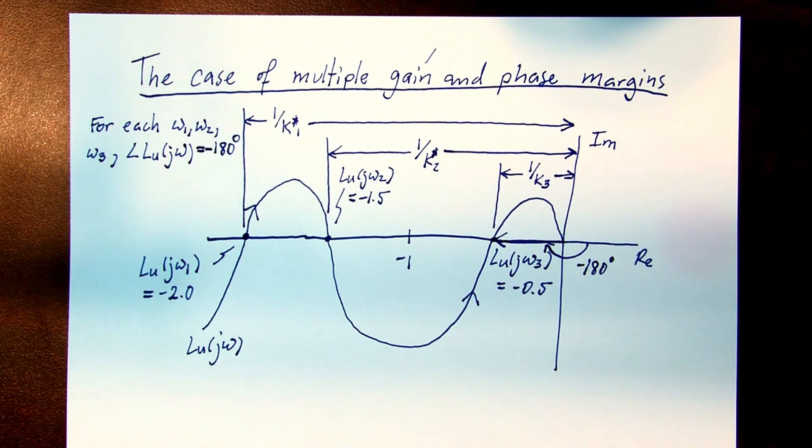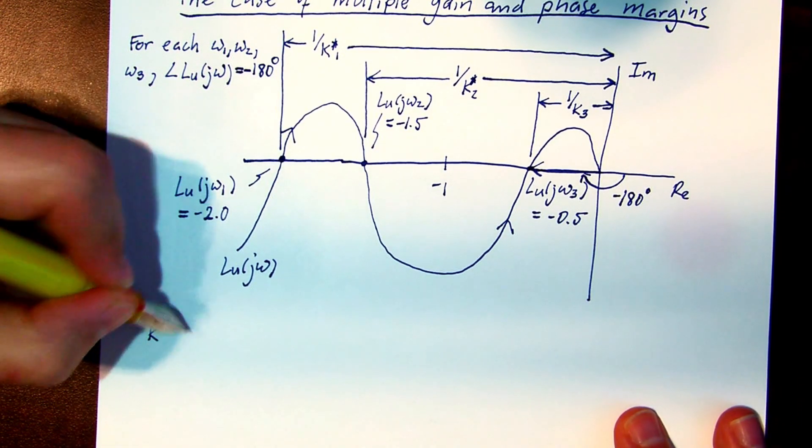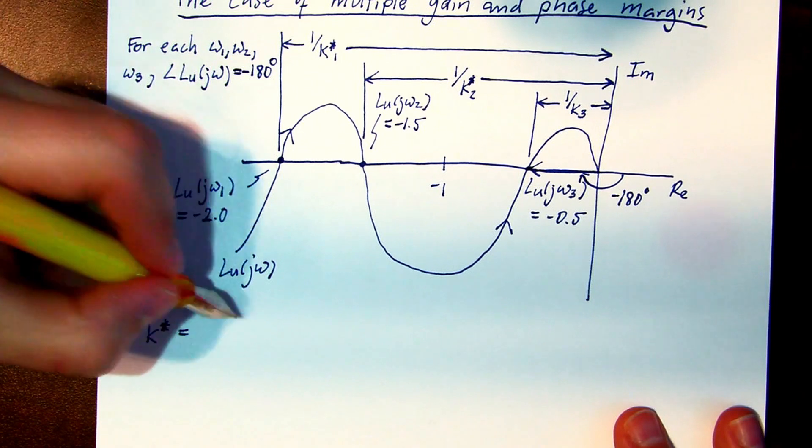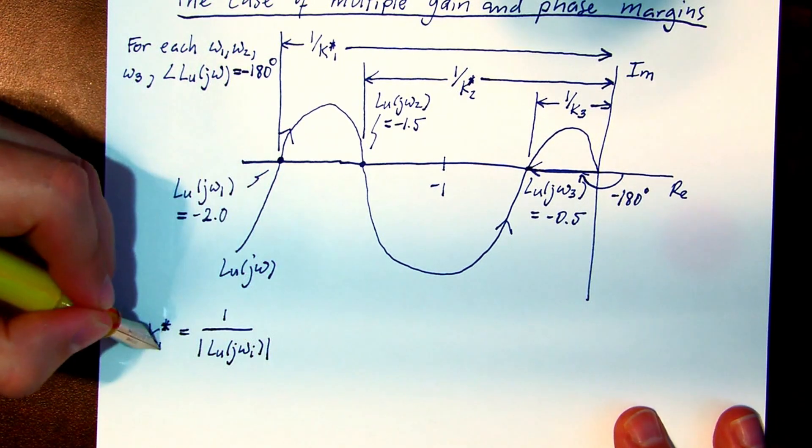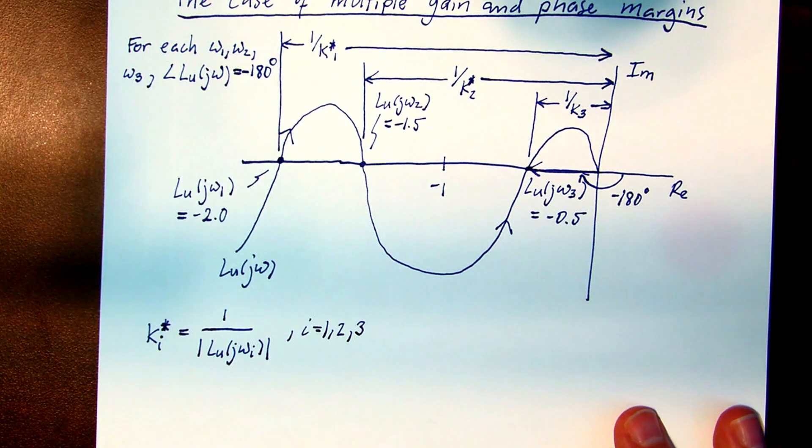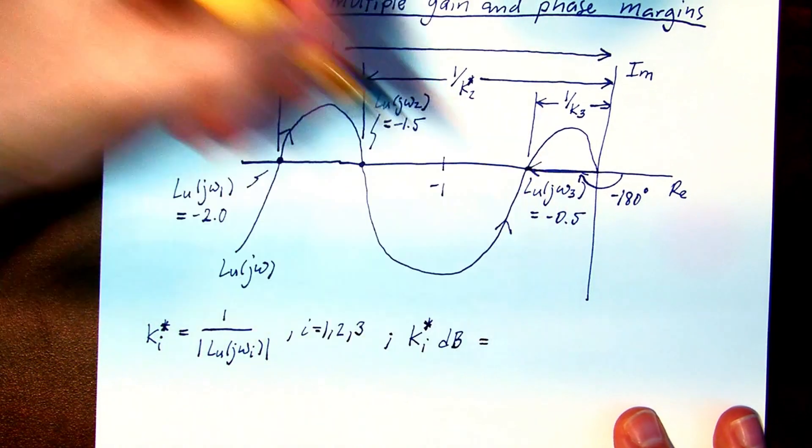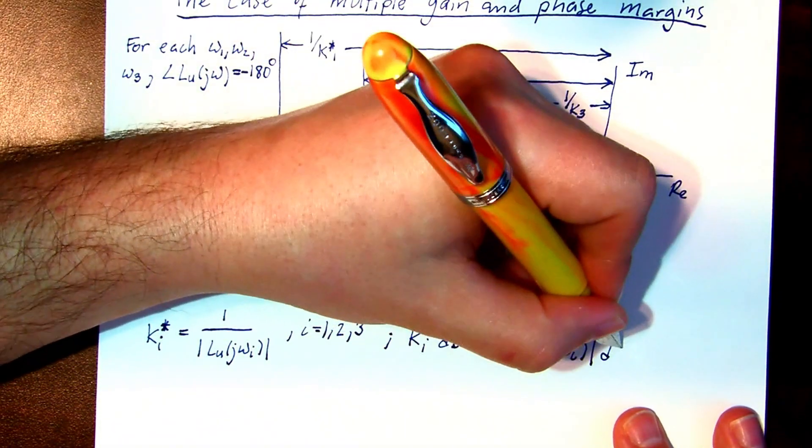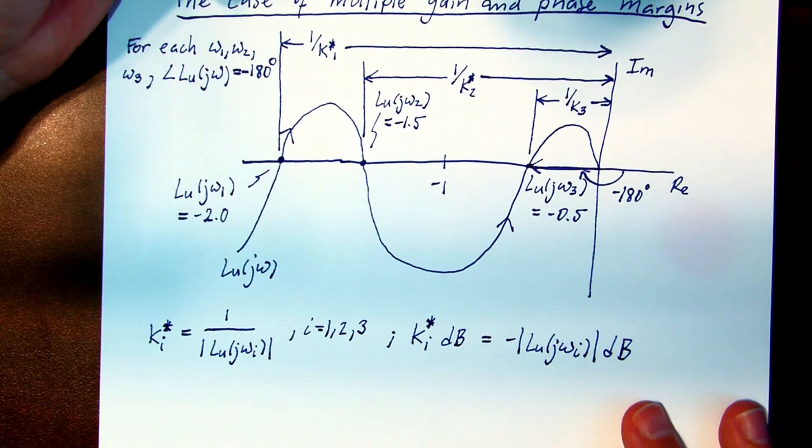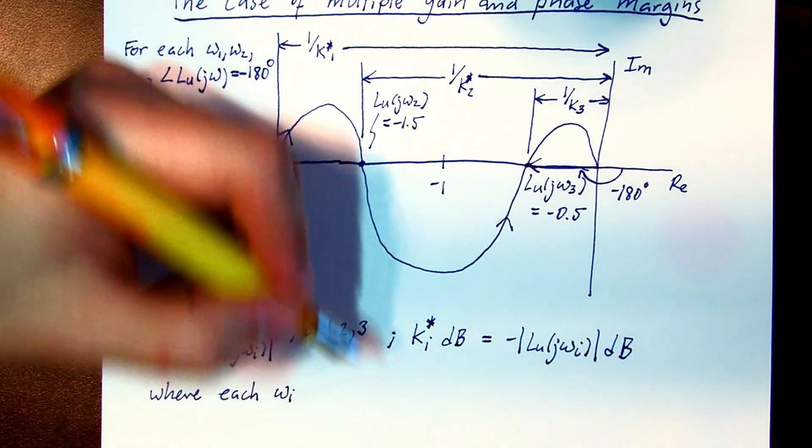The phase angle for each of these values of loop gain is minus 180 degrees. So each gain margin, or each k star, is simply 1 over the magnitude of the loop gain when its phase angle is minus 180 degrees. If we express that in decibels, we can show that it's minus the magnitude of the loop gain, again when the loop gain is minus 180 degrees.